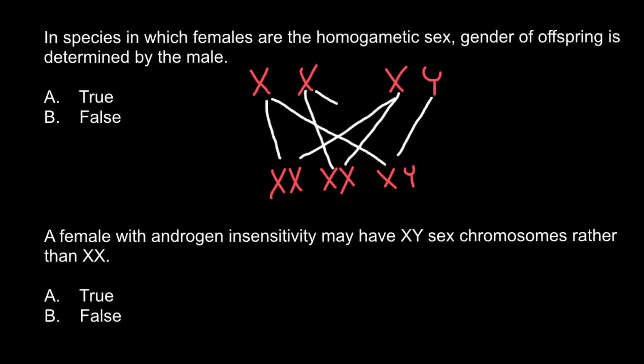And the last variant that is possible here would be that female would give this X chromosome and male would give this Y chromosome. So the genotype would be XY. So as you see, 50% of the progeny would be females and 50% of the progeny would be males.